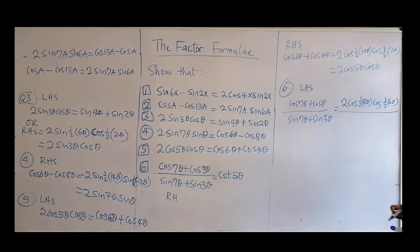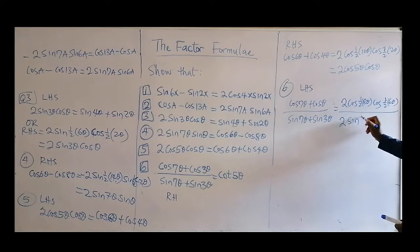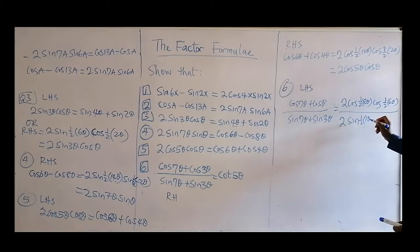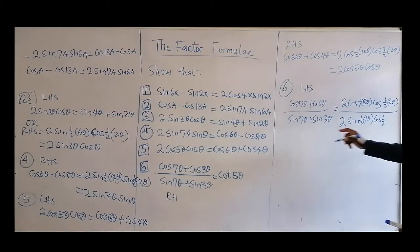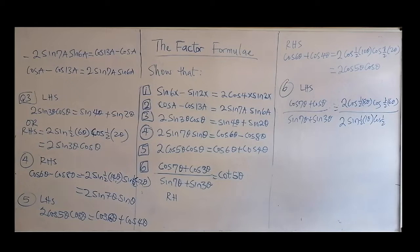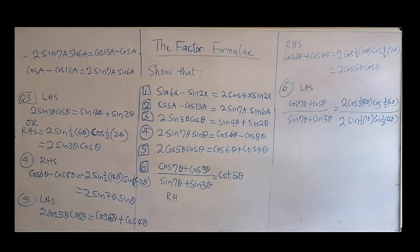For the denominator — additions of sines — it's going to be 2sine of half of (sum) times cosine of half of (subtraction). The sum is 3θ + 2θ... wait, I need to check the question again. Actually the denominator uses 7θ and 3θ, so the sum = 10θ and the subtraction = 4θ.